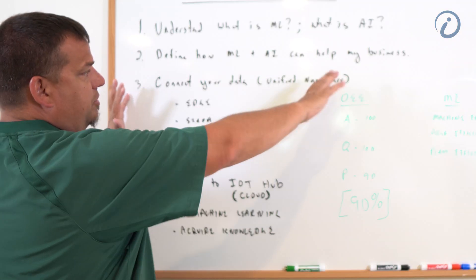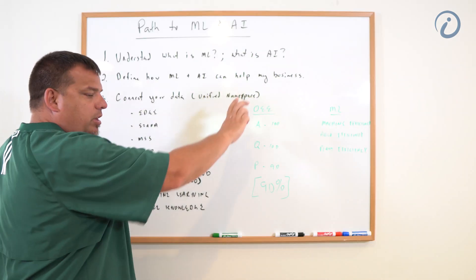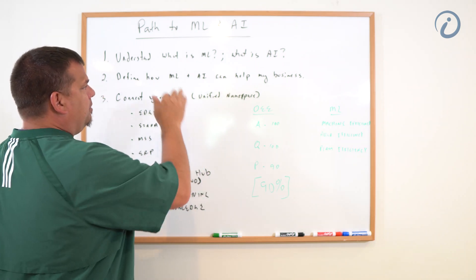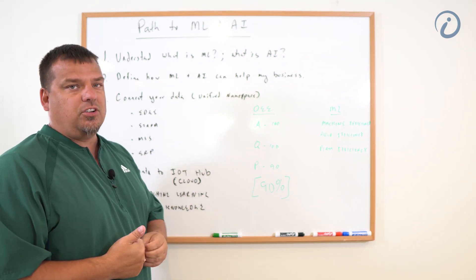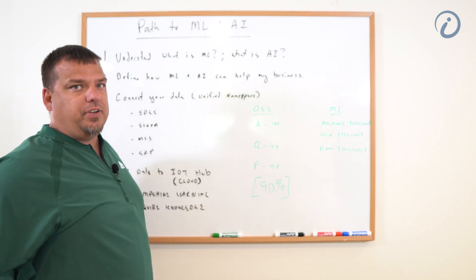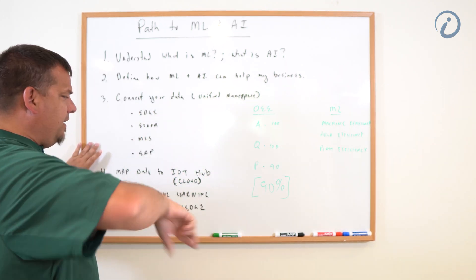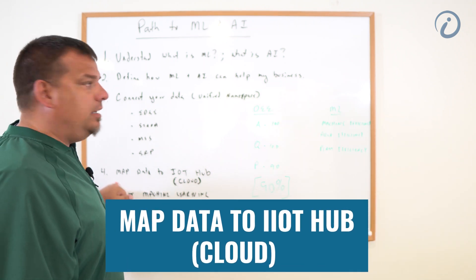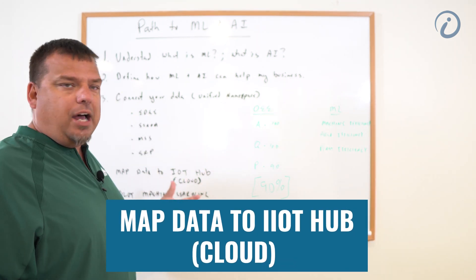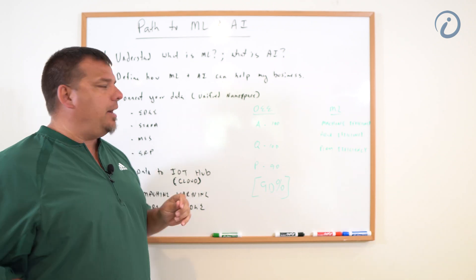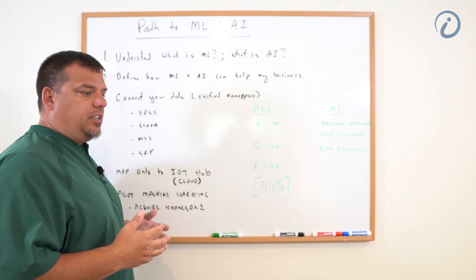The first thing we want to do is connect our data into the unified namespace. This is a critical component — you will not be able to deploy a wide-scale enterprise machine learning AI without doing the unified namespace. The next step after that is we have to map all that data into the IoT hub or into the cloud. Eventually, all this information needs to find its way into the cloud.